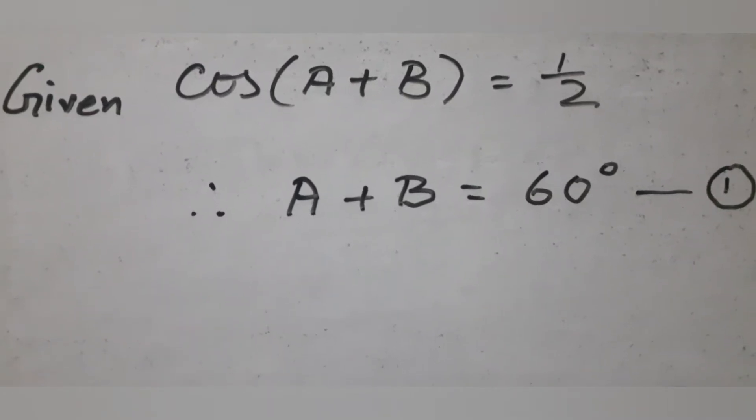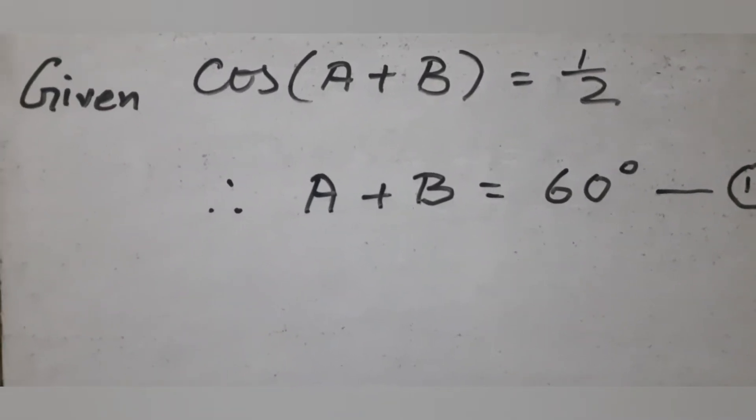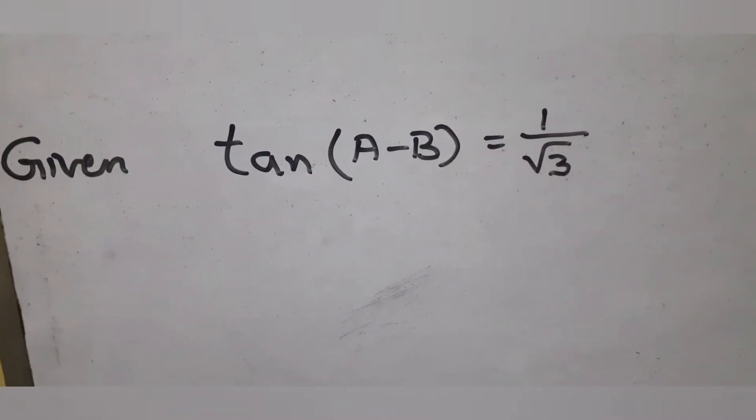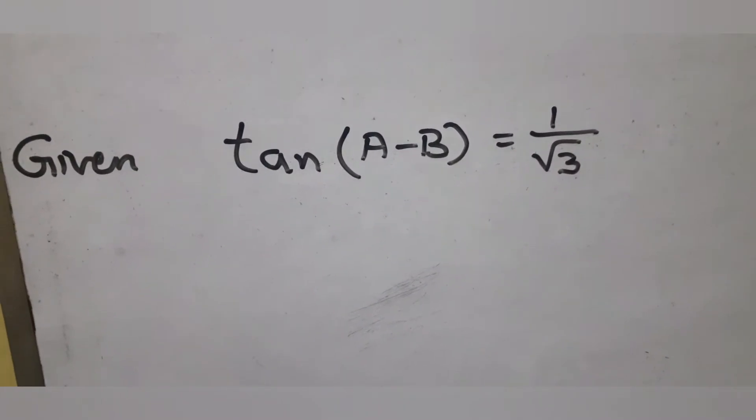There's a link to standard values in the description. Since tan(A-B) = 1/√3, and tan 30° = 1/√3, we conclude A-B = 30°.